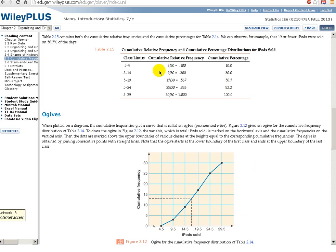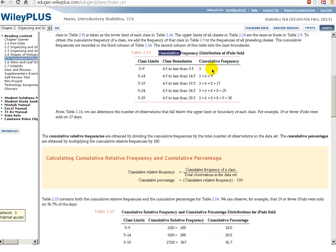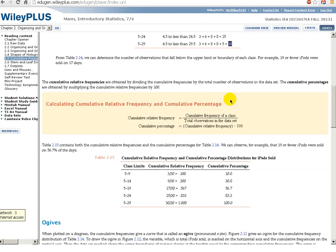Now, what if we convert, as we've done many times before, from the actual frequencies, 3, 9, 17, 25, 30, if we divide that by the total, just like we've done so many times already. So we get 3 divided by 30 because the total was 30. We get 9 divided by 30, 17 divided by 30, 25 divided by 30, and finally 30 divided by 30. Now, 30 divided by 30 is 1. So finally, at the end, we get 1.